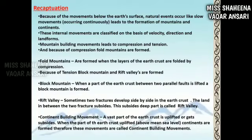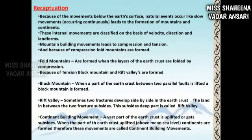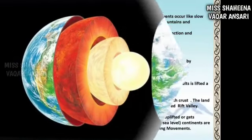Because of tension, block mountains and rift valleys are formed. Block mountain: when a part of the earth's crust between two parallel faults is lifted, a block mountain is formed. Rift valley: sometimes two fractures develop side by side in the earth's crust; the land between the two fractures subsides, and this subsided deep part is called a rift valley. Continent-building movement: a vast part of the earth's crust is uplifted or subsided. When the part of the crust is uplifted, continents are formed — therefore these are called continent-building movements.